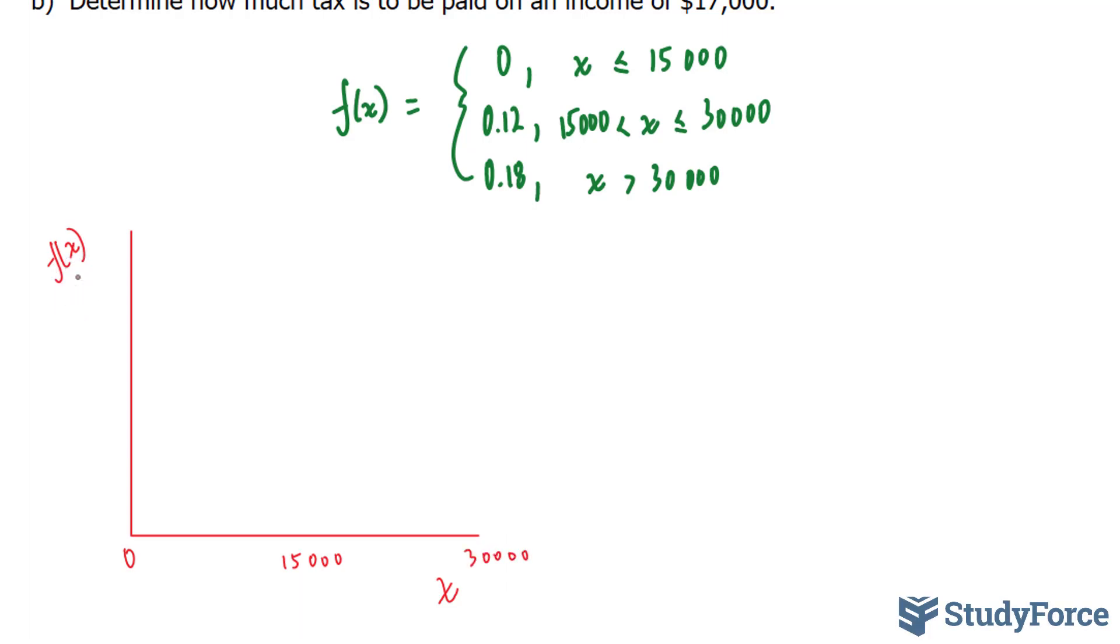And for my f(x), I will use intervals leading up to $0.18. Now, what we will do is graph this first part. And they say that if you make less than $15,000, so from here all the way to here, you pay nothing.